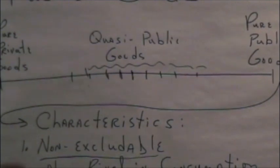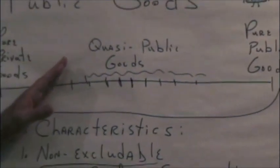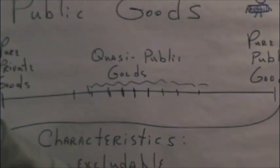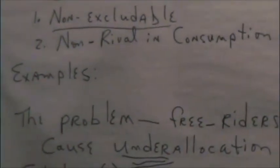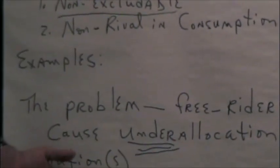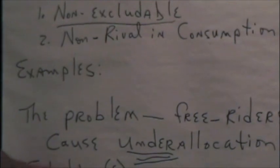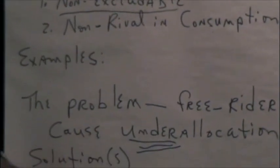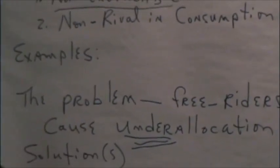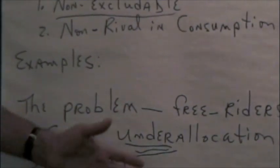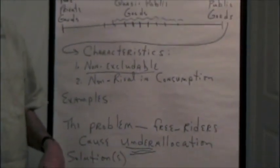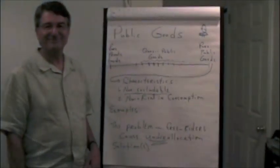So, that's public goods, what they are, what the problem is, blood sucking free riders. What is the solution? The most common solutions are either to tax, to form a government and to tax, or to tie the payments to something else that's related to the public good. That's it!